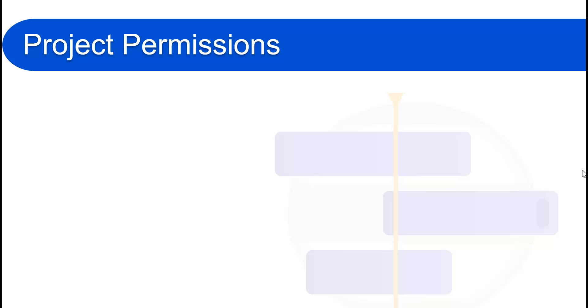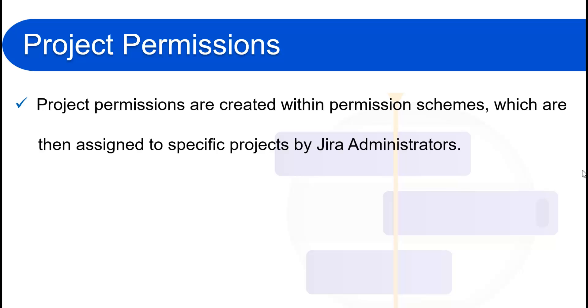Next we will see project permissions, which is a very important permission that a Jira admin uses on a day-to-day basis. Project permissions are created within permission schemes, which are then assigned to specific projects by Jira admins. I've used the term 'permission scheme' — I'll explain that in my next videos.